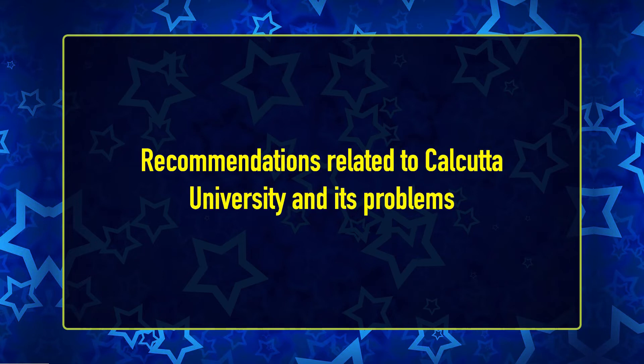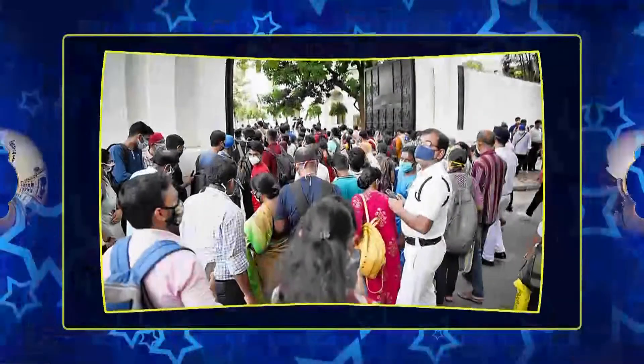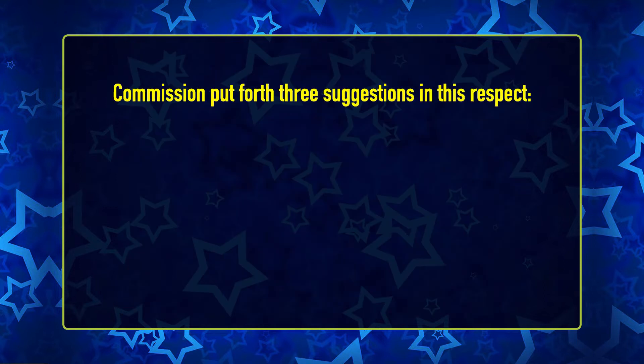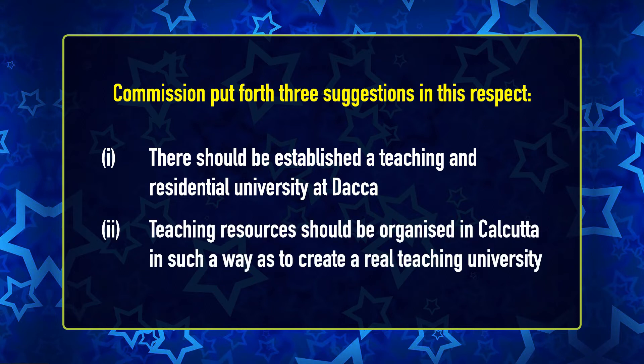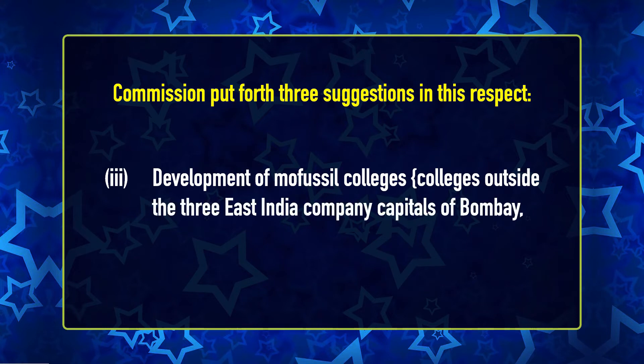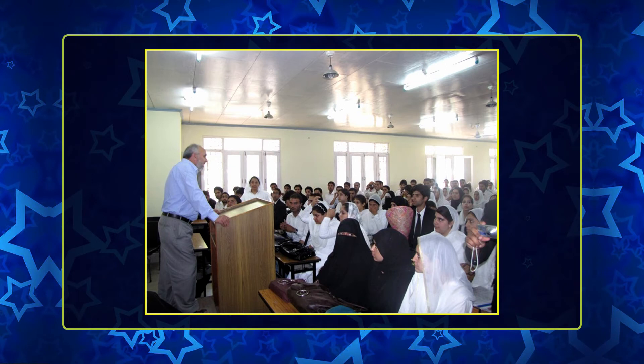Regarding recommendations related to Calcutta University, the Commission thoroughly examined its problems and concluded that the university had become abnormally large, with the number of students and colleges affiliated to it having increased too much to be efficiently managed under a single university. The Commission put forth three suggestions: first, a teaching and residential university should be established at Dhaka; second, the teaching resources should be organised in Calcutta to create a real teaching university; and third, Mufusil colleges outside the three capitals of Bombay, Calcutta and Madras should be developed to encourage the gradual rise of university centres by concentrating resources for higher education on them.